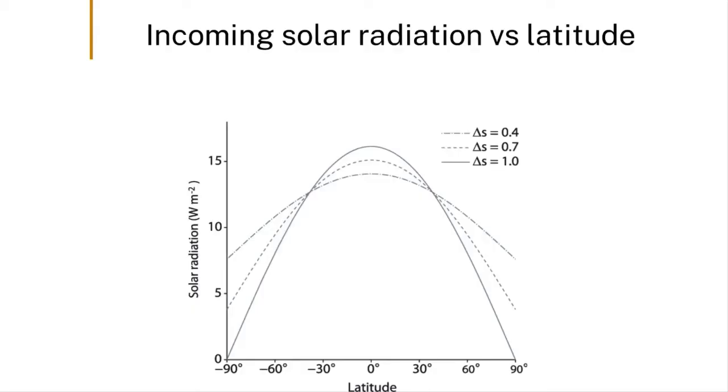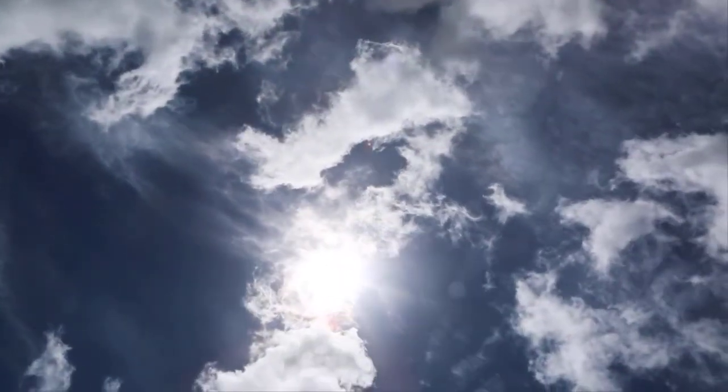Now for Earth to be in somewhat of a thermal equilibrium, this incoming radiation must be balanced by outgoing radiation from Earth back out to space.